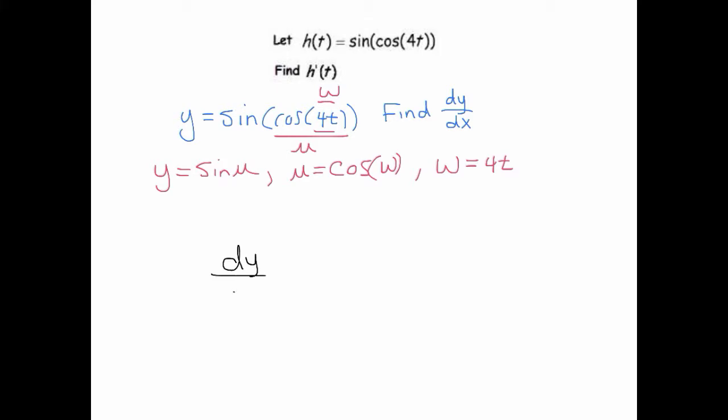So using the chain rule we have that dy/dt is equal to dy/du - that's the first relationship here on the left between y and u - times the next relationship is between u and w, du/dw.